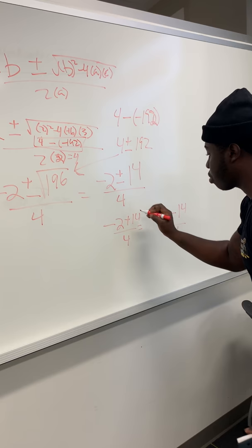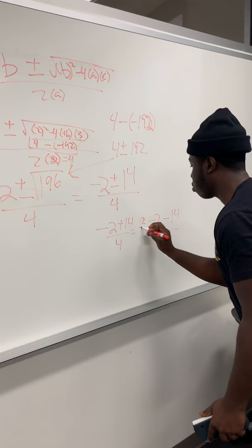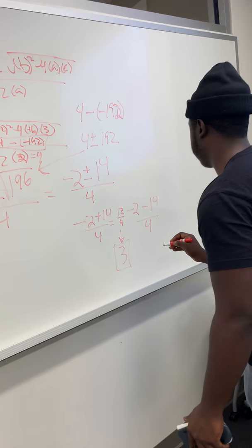This answer would be 3 because negative 2 plus 14 is 12, and 12 over 4 equals 3.